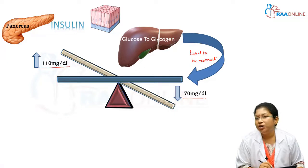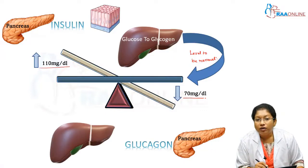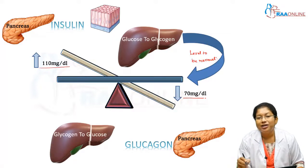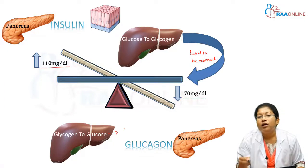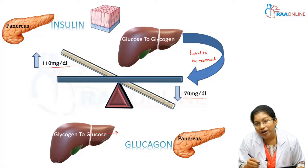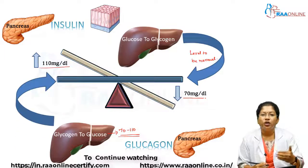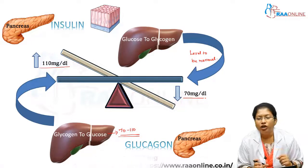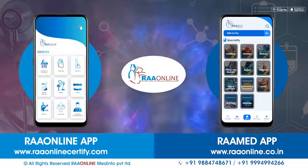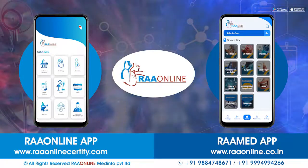When blood glucose falls below 70 milligrams per deciliter, the pancreas releases another hormone, glucagon. Glucagon converts glycogen to glucose — that is, it stimulates glycogenolysis — so that glucose is released from the liver into the circulation to maintain blood glucose levels between 70 to 110 milligrams per deciliter, reverting back to normal. This is what happens when there is a derangement in blood glucose values.